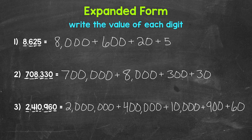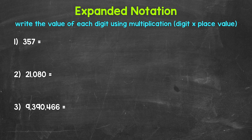Let's move on to expanded notation. Here are our examples for expanded notation. Now when we write a number in expanded notation, we expand the number out to show the value of each digit using multiplication. We multiply each digit by its place value. Let's jump into our examples, starting with number 1 where we have 357.